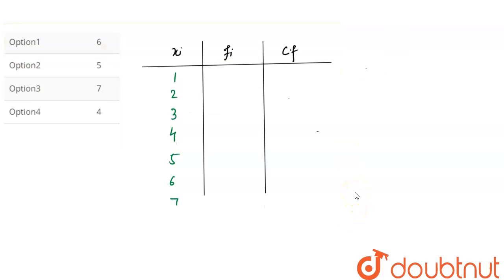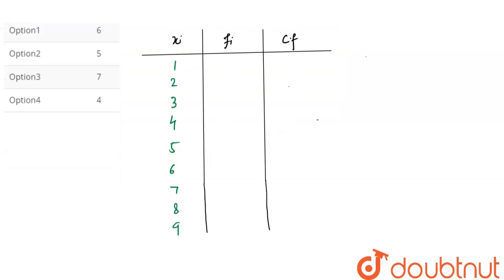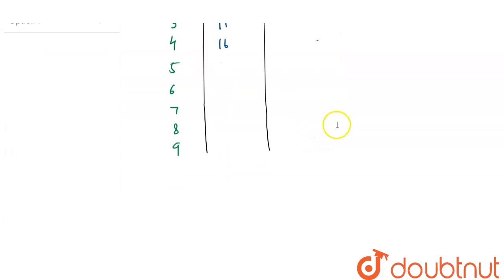Now here for fi we have 8, 10, 11, 16, and here we have 20, 25, 15, 9, 6. Right, now let's calculate the cumulative frequency.